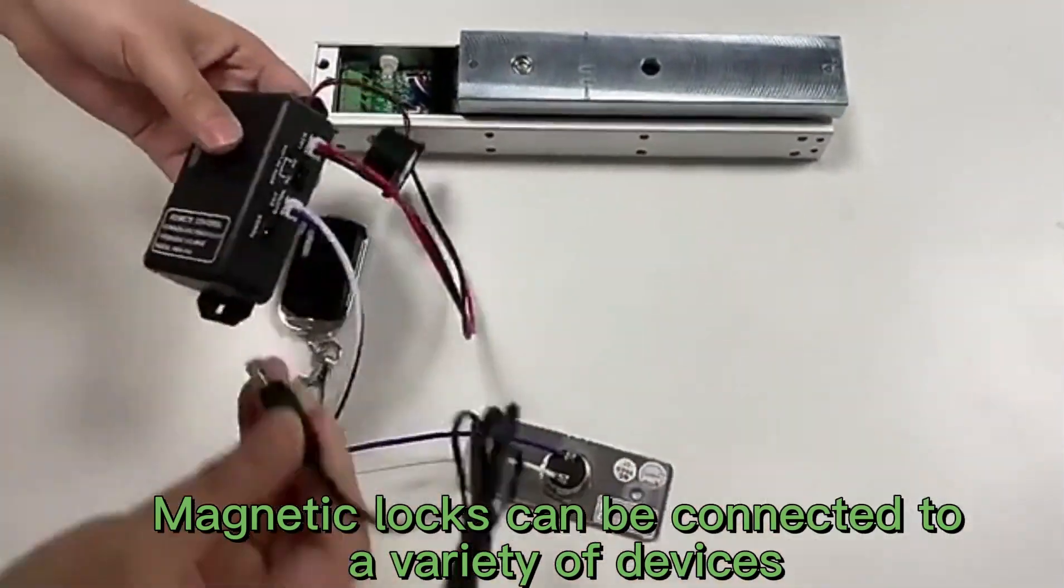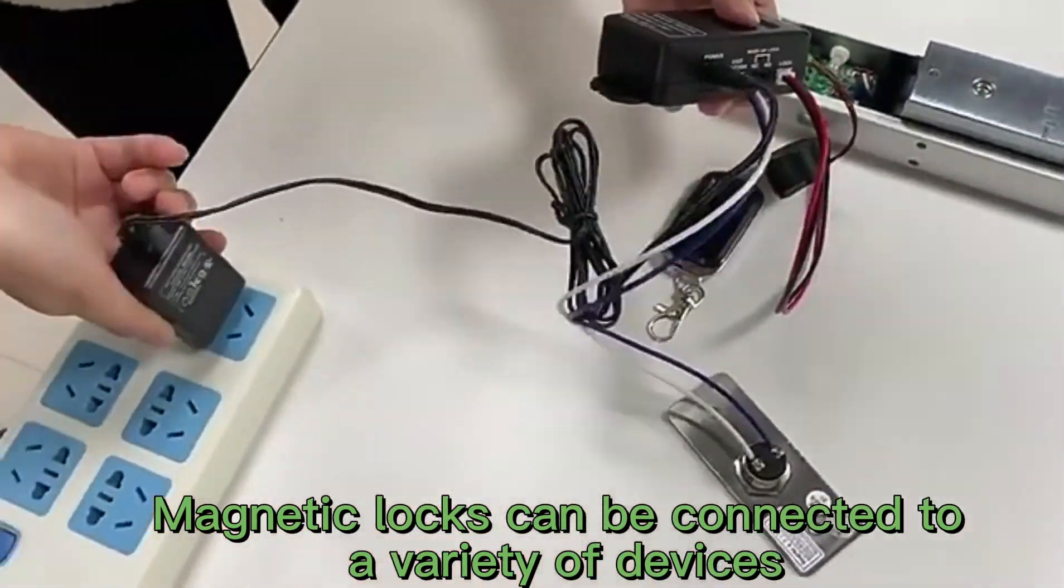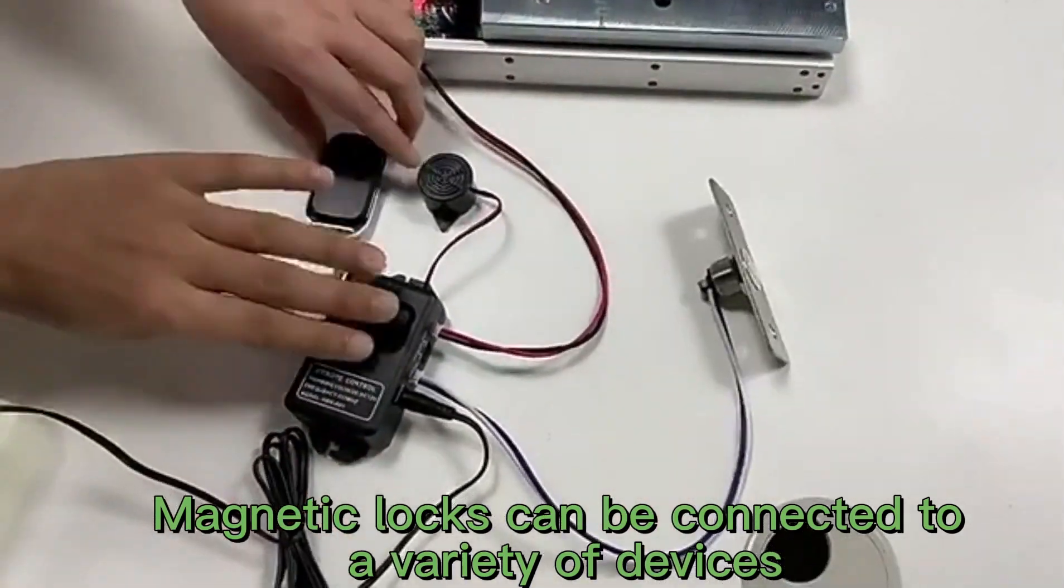Finally, connect the power adapter to the receiver and plug the power adapter into the outlet. Then, we will show you how to pair the transmitter with the receiver.